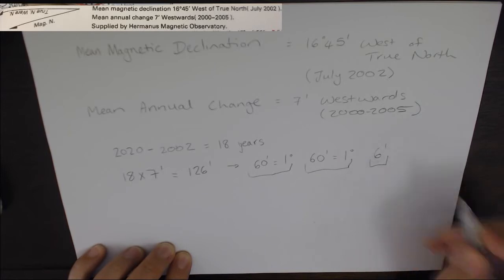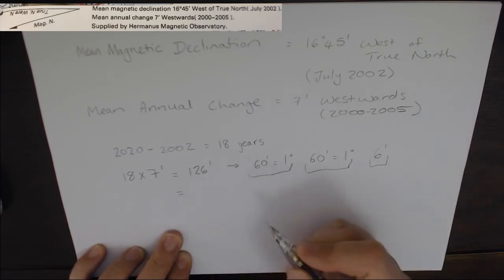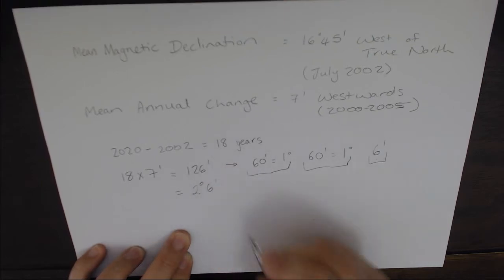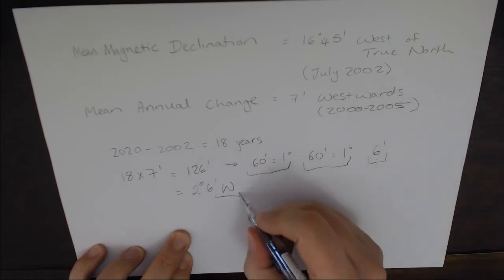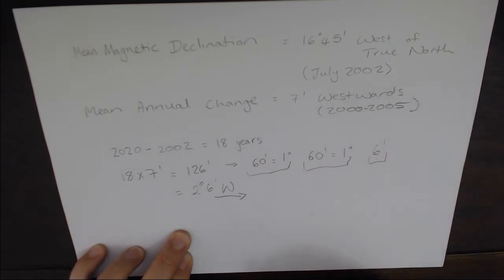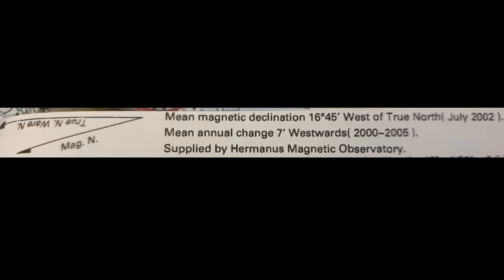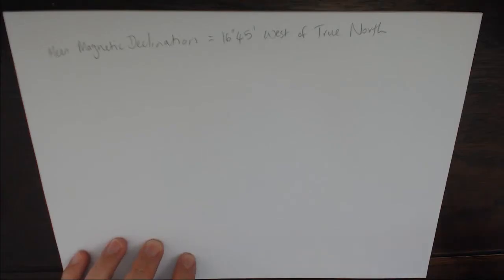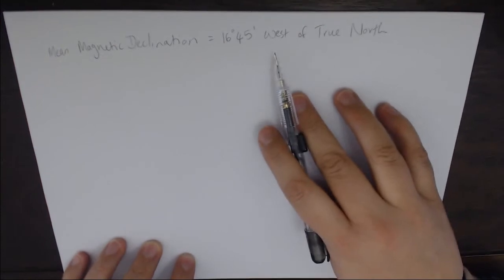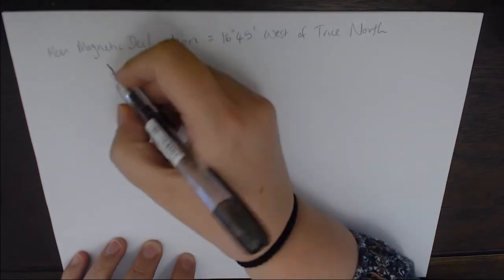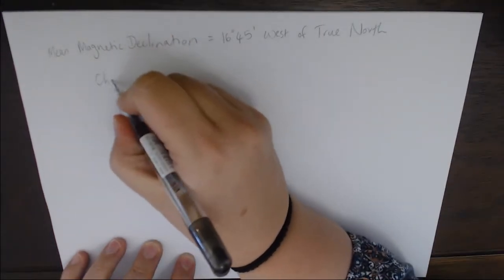What we actually have here is 2 degrees and 6 minutes westwards. That is giving us our current change in terms of the magnetic declination. So what are we going to do with those 2 degrees and 6 minutes? We have calculated that annual change to present day and we have the magnetic declination west of true north.